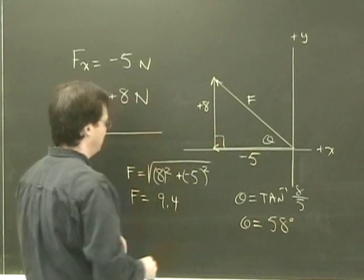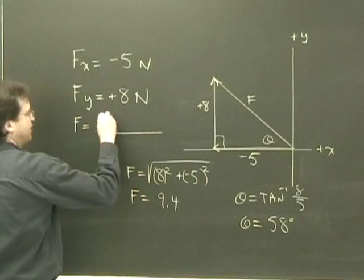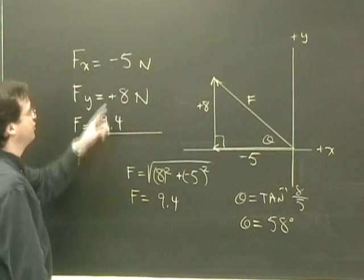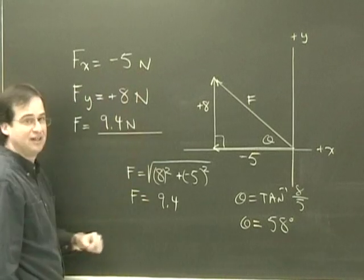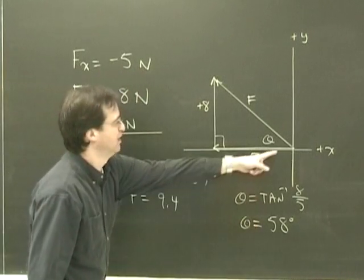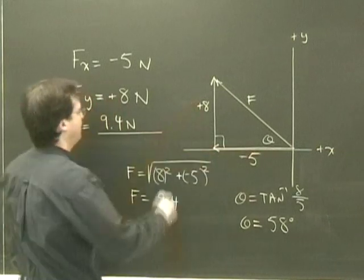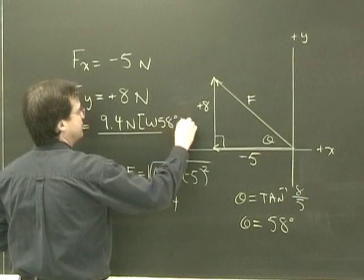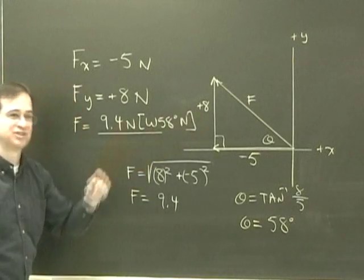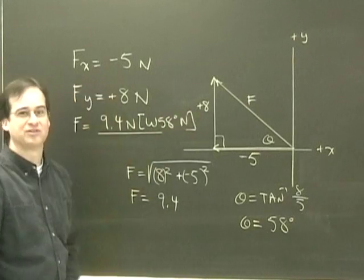So putting it all together, my magnitude is 9.4. I've got to check the units. My units were newtons, so this is going to be 9.4 newtons. And there's my angle, and we said it was west, 58 north. So west, 58 degrees north. There is the original vector that these components were made from.